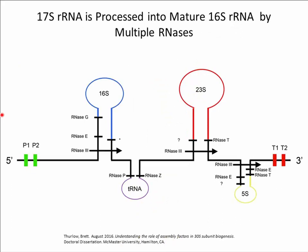RNA processing occurs by multiple endo- and exonucleases and is an essential step to the formation of a functional 30S subunit. Specifically, 17S RNA is initially transcribed in an operon along with 50S ribosomal RNAs termed 23S and 5S, and one or two tRNA molecules. Immediately upon transcription, RNase III processes the 17S RNA transcript by removing it from the operon in the form of an immature RNA molecule. Subsequently, the 17S RNA molecule is further processed by removal of additional nucleotides on the 5' and 3' ends to form a mature 16S RNA molecule.